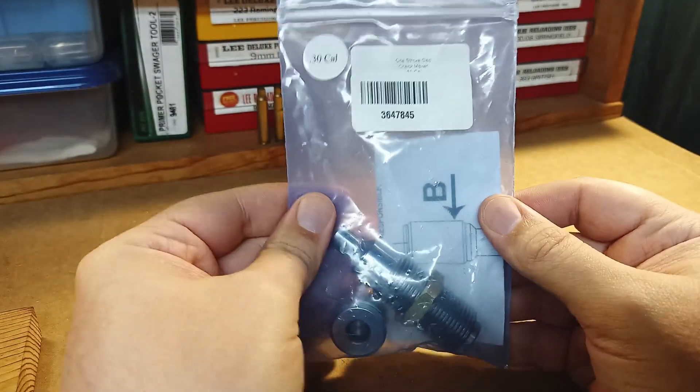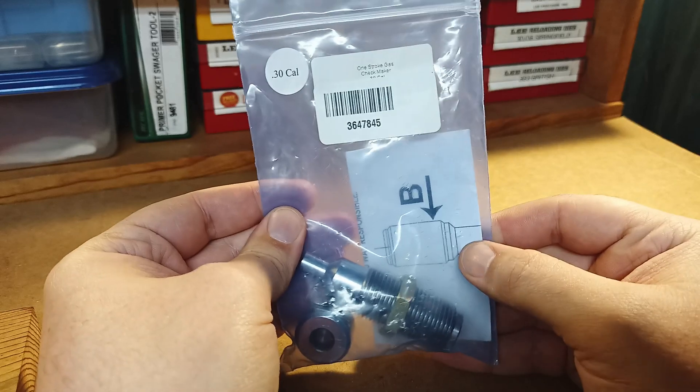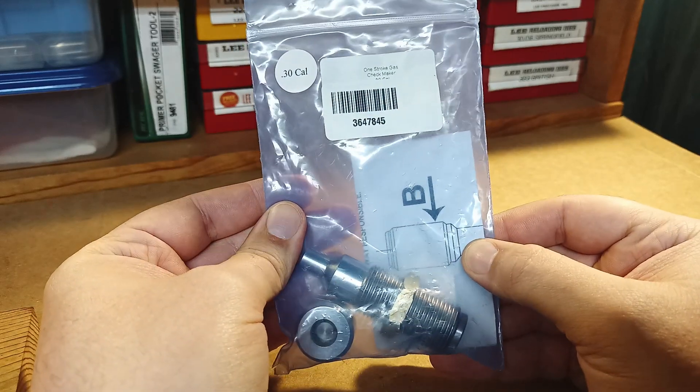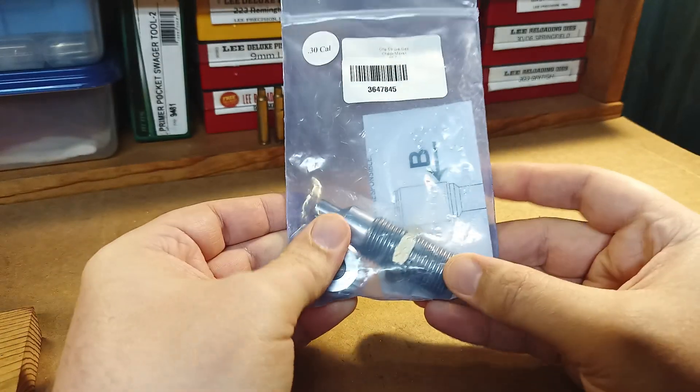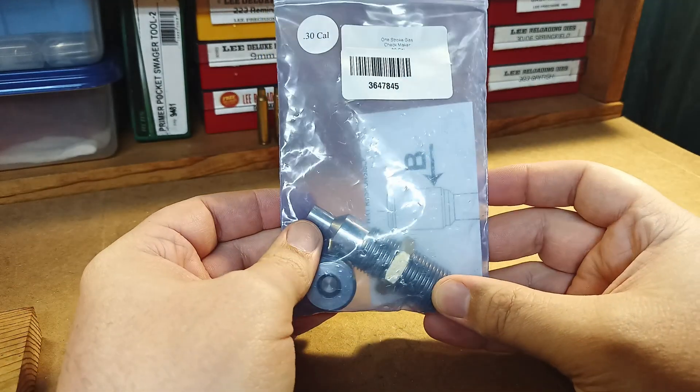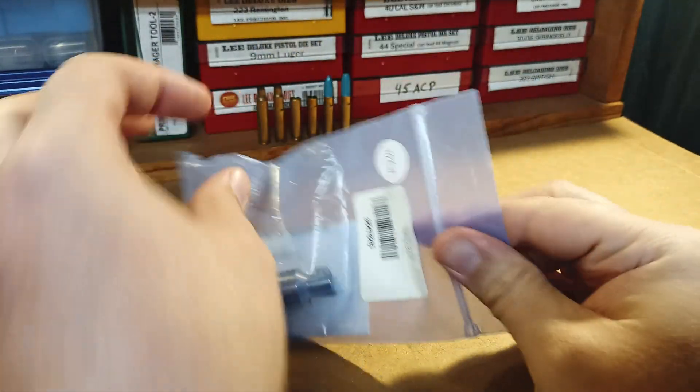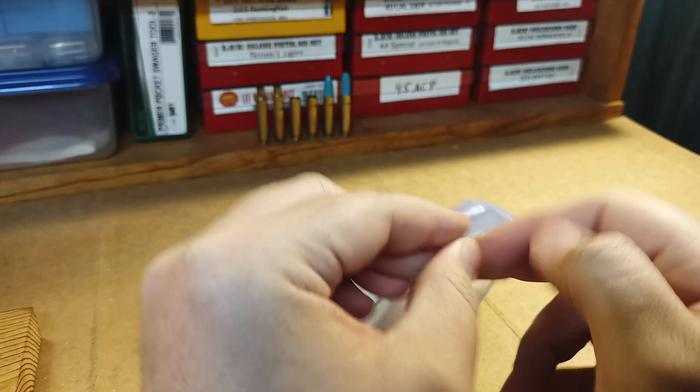This is the One Stroke Gas Checkmaker. I got this in 30 cal. I bought this from Optics Planet on Black Friday, and this is the condition that it showed up in. It was mailed in a plastic mailer, and they got pretty beat up.